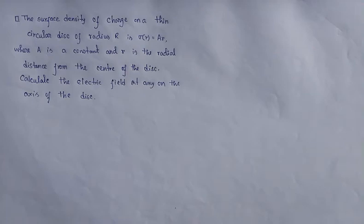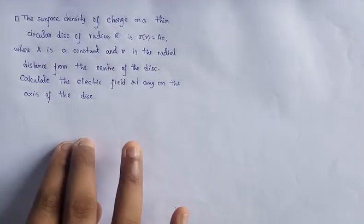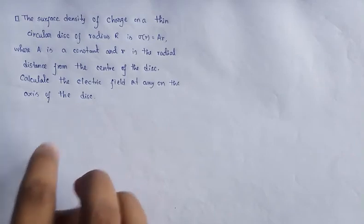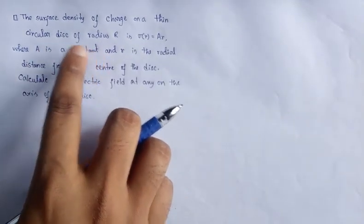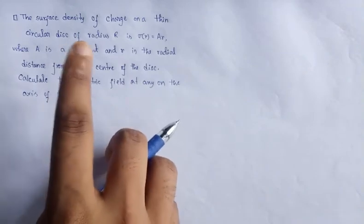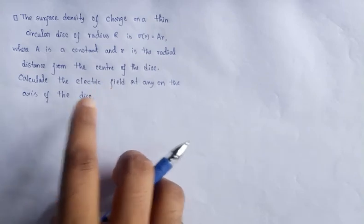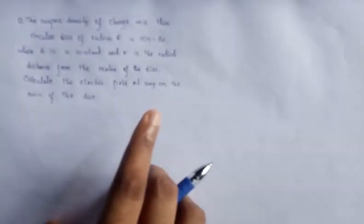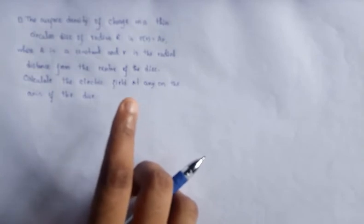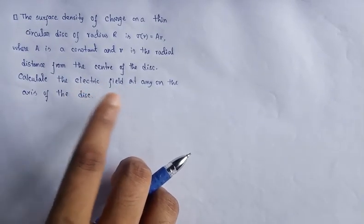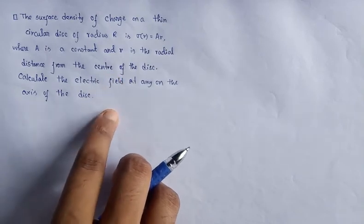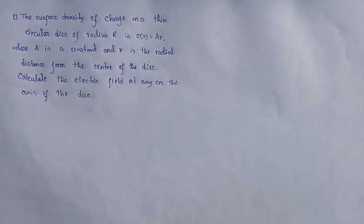Hi friends, welcome to my video. In this video we are going to solve a basic electrostatic problem. The problem is as given: the surface charge density on a thin circular disk of radius R is sigma as a function of r, equal to A times r, where A is a constant and r is a radial distance from the center of the disk. Calculate the electric field at any point on the axis of the disk.